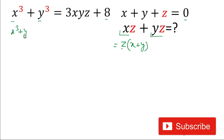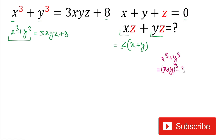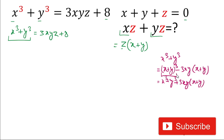For solving this problem, the given equation is x³ + y³ = 3xyz + 8. In place of x³ + y³, we can write (x + y)³ − 3xy(x + y). If we expand (x + y)³, we get x³ + y³ + 3xy(x + y), so the 3xy(x + y) terms cancel and we recover x³ + y³.